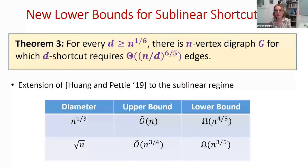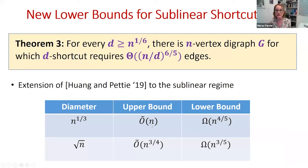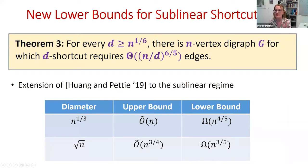We can also tweak the lower bound construction of Huang and Pettie to get interesting lower bounds. For n^(1/3), our current upper bound is linear, but the lower bound we get is something like n^(4/5) edges. For square root n, currently we get Õ(n^(3/4)), but the lower bound is roughly n^(3/5). So there are very interesting gaps here that I'll mention throughout the talk.